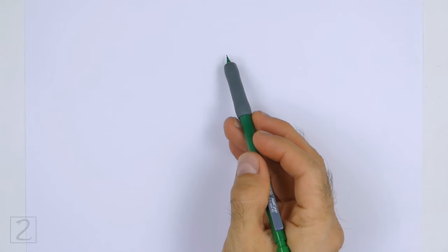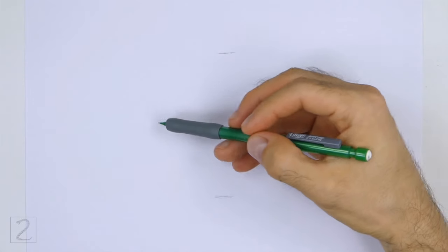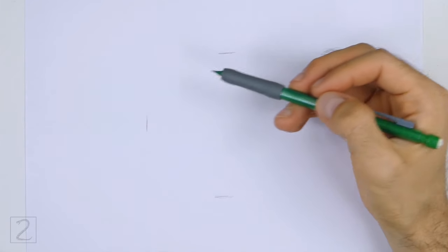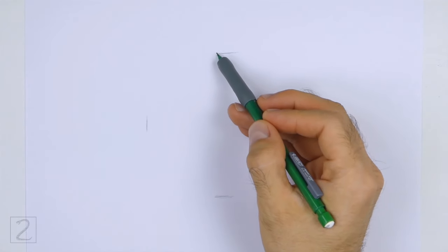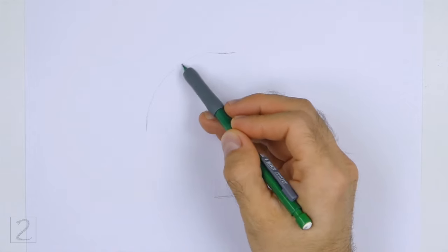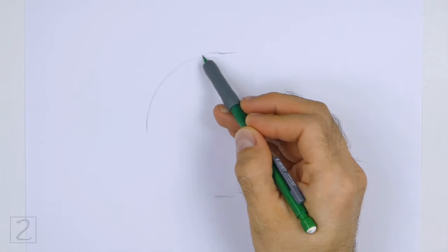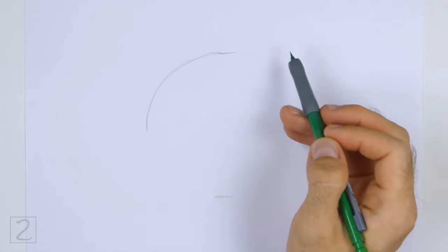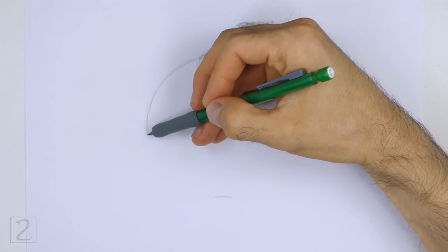Start by drawing a circle as a guide for the head. To draw the circle, first make two small marks to indicate the circle's length, and then on the sides make two more small marks to indicate the circle's width. Then connect the marks using curved lines to finish the shape of the circle.